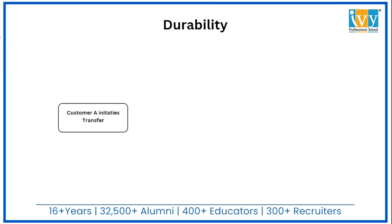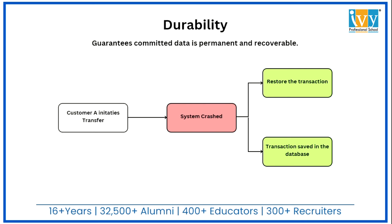Durability guarantees that once a transaction is committed, the changes are permanent, even in the event of a system crash or failure. For example, if Customer A initiates a transfer and the system crashes afterwards, the transaction will still be saved and not be lost. The transaction will be restored and its effects reflected in the database. Durability ensures that committed data persists and is reliable no matter what happens to the system.